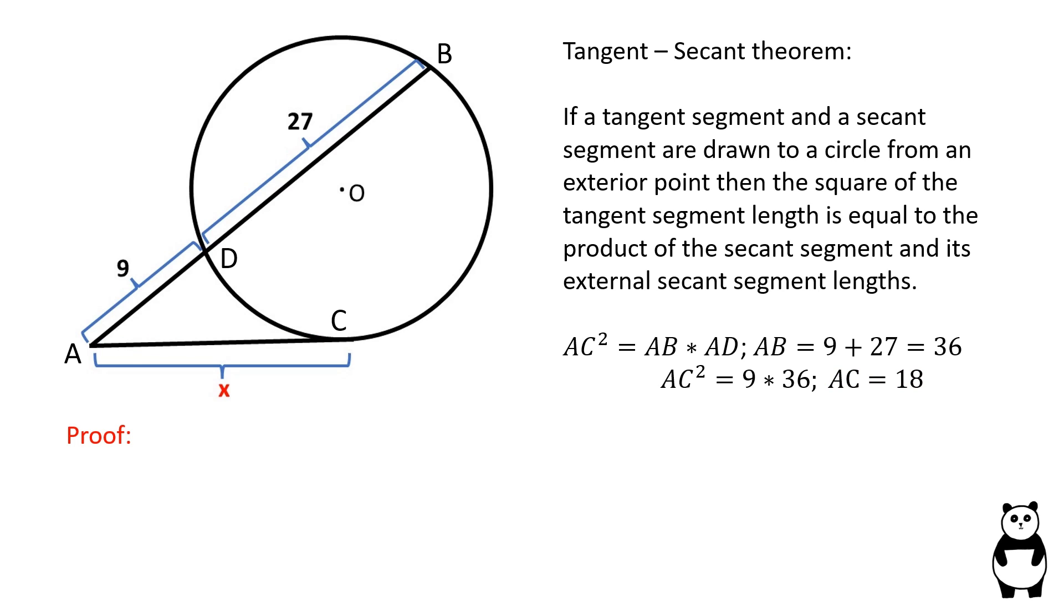Let's prove this theorem. Triangles ABC and ACD are similar because two pairs of corresponding angles are equal.